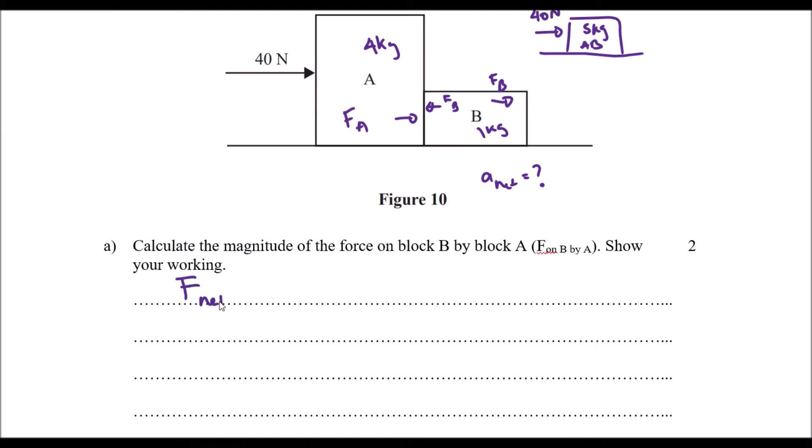So F net equals to the mass A plus B, and the net acceleration. The net force is 40, the net mass is 5 kilograms multiplied by our net acceleration. So our net acceleration, in this case, is 8 meters per second squared. Okay, that's quite fast actually.